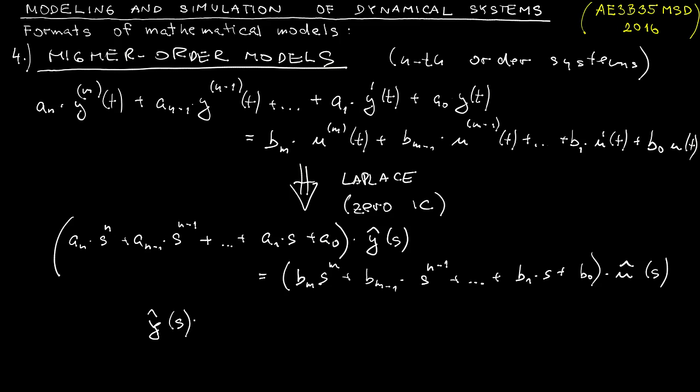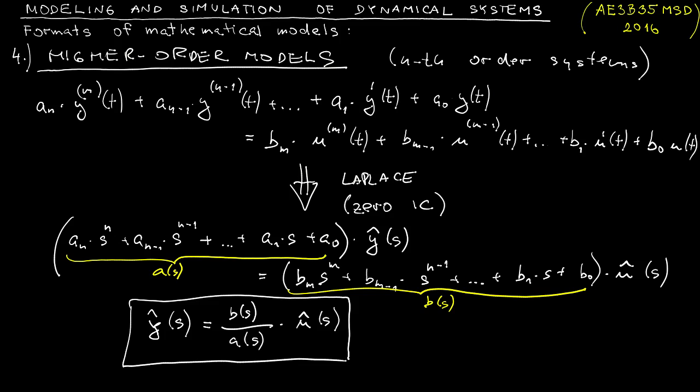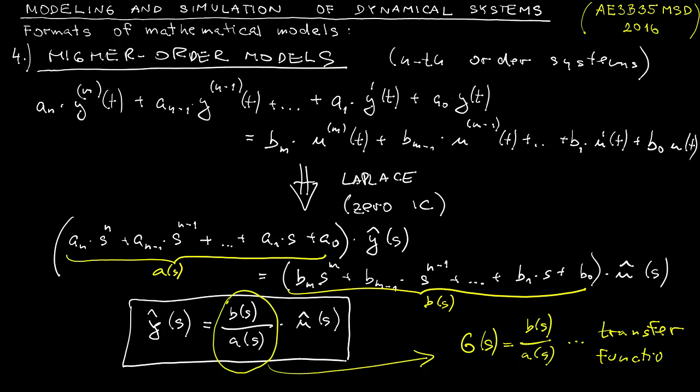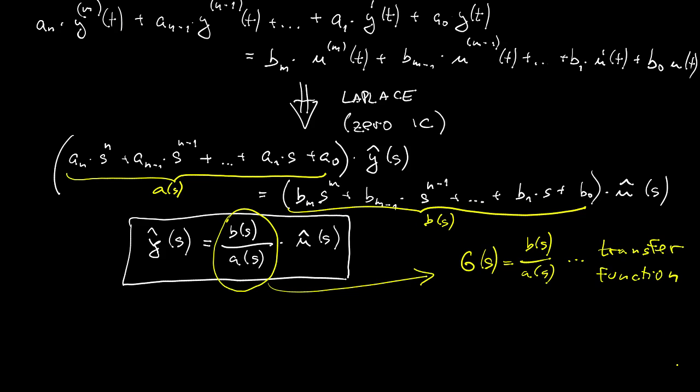Now the culmination of this development is that we can express the Laplace transform of the output as a function of the Laplace transform of the input using the two polynomials a and b, actually using their fractions. So b over a is the term that relates the input and output. It's so important that we give it a name, first a symbol, let's label it G, and we call it a transfer function. This is stuff that has been introduced in elementary or introductory courses on automatic control.